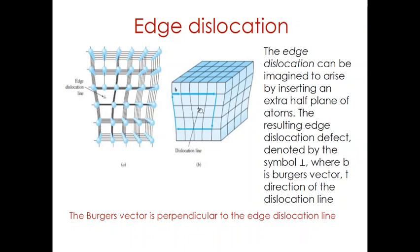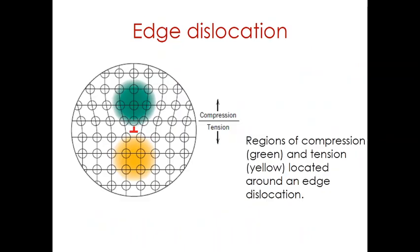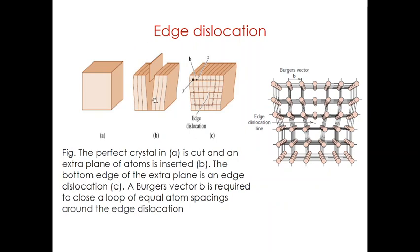Dislocations are non-equilibrium defects and they store energy in the distorted region of the crystal lattice around the dislocations. This is the extra half-plane of atoms, and in the local vicinity of this extra half-plane — what we call an edge dislocation — compression and tension fields exist. The dislocation has a region of compression strain at the extra half-plane and a region of tensile strain below the extra half-plane of atoms.